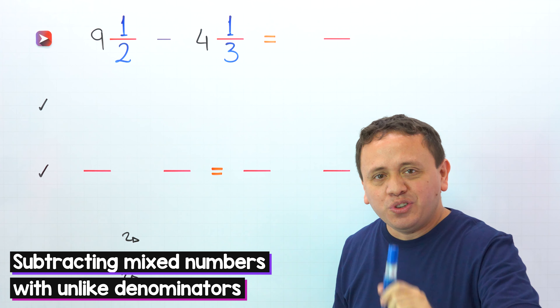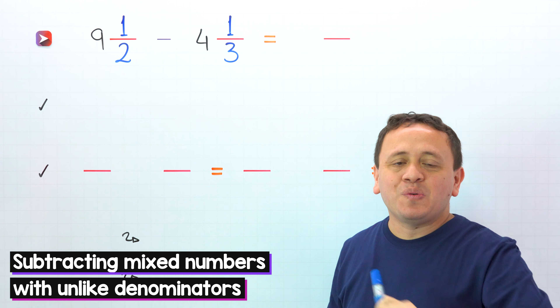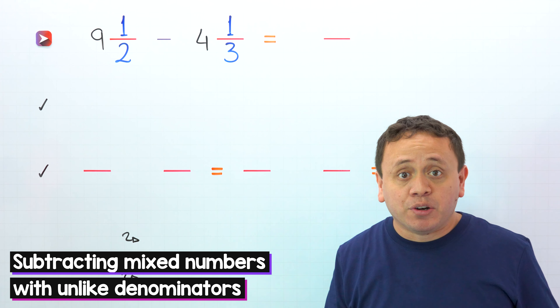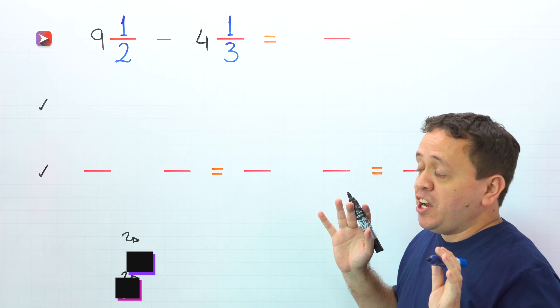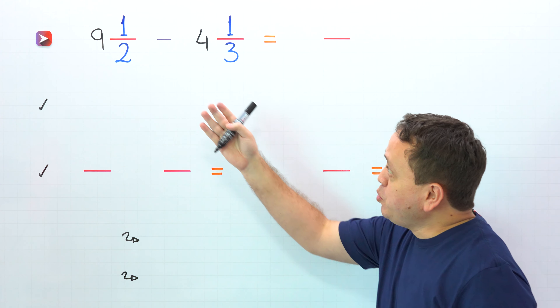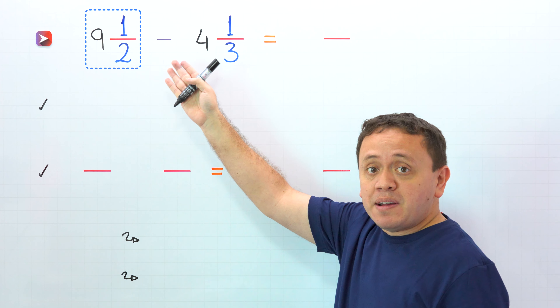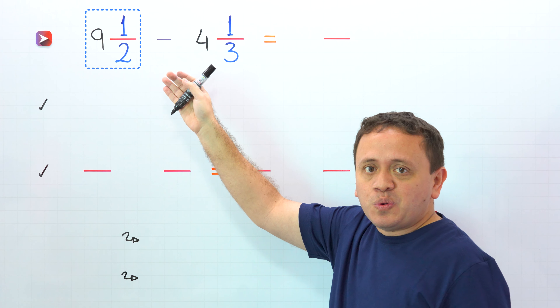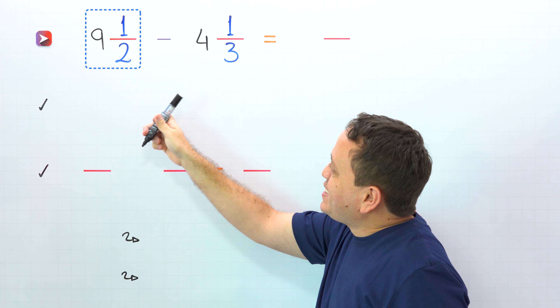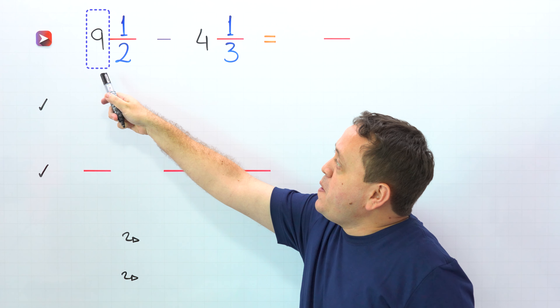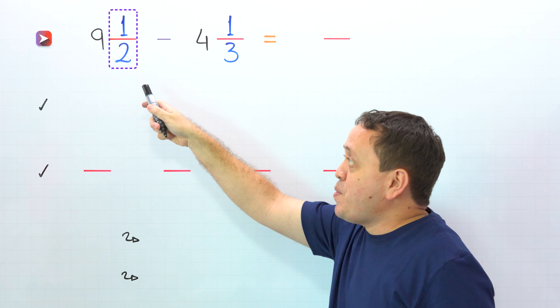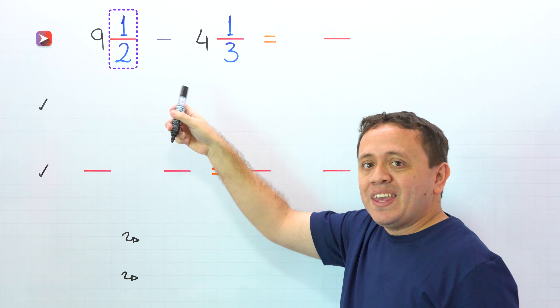Today we're going to take a look at how to subtract mixed numbers with unlike denominators. Before getting into it, we need to remember that a mixed number, like this one, is the sum of a whole number and a proper fraction.